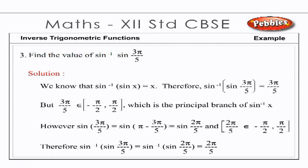Example: Find sin⁻¹(sin(3π/5)). Solution: Note that 3π/5 is not in the principal value branch [−π/2, π/2] of sin⁻¹(x). However, sin(3π/5) = sin(π − 3π/5) = sin(2π/5), and 2π/5 ∈ [−π/2, π/2]. Therefore, sin⁻¹(sin(3π/5)) = sin⁻¹(sin(2π/5)) = 2π/5.